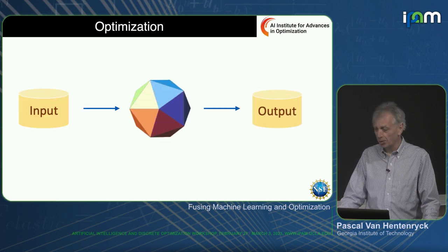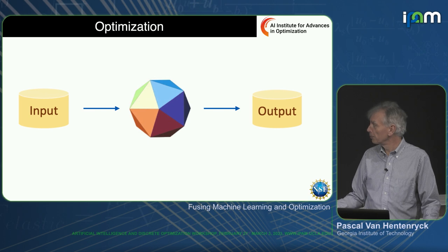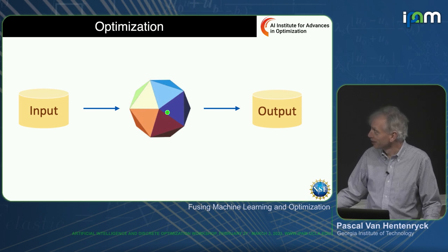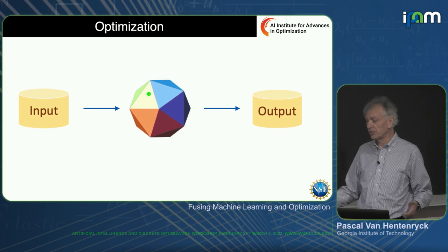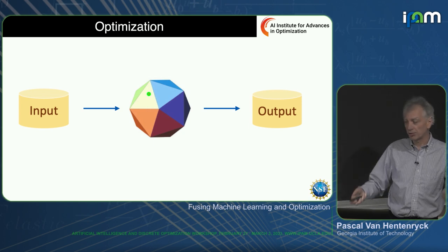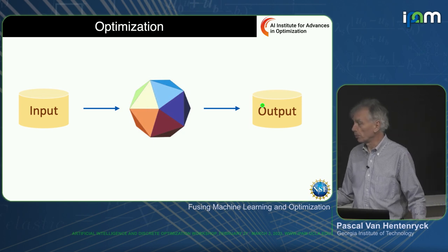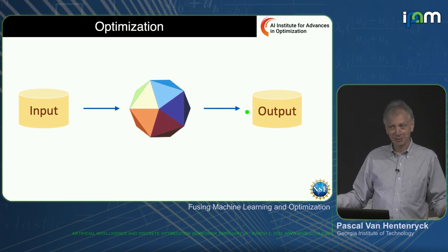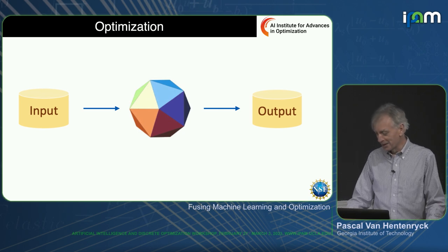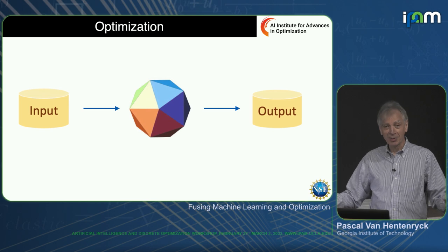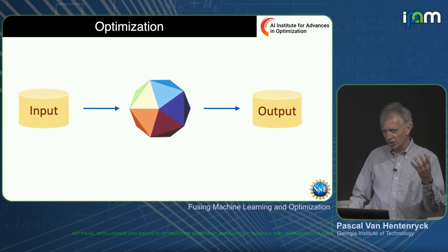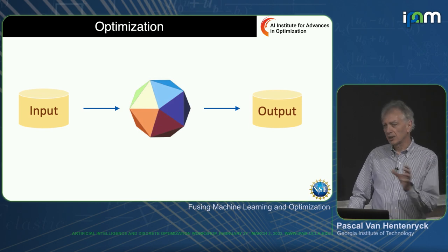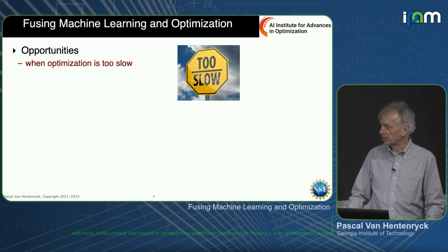In optimization, you get an input, you have the optimization solver, you give a model and an instance, and then you get a beautiful output — an optimal solution. You may ask, why do we need machine learning? One of the things we were thinking about is: what are the situations where the two technologies together can do things that are interesting?